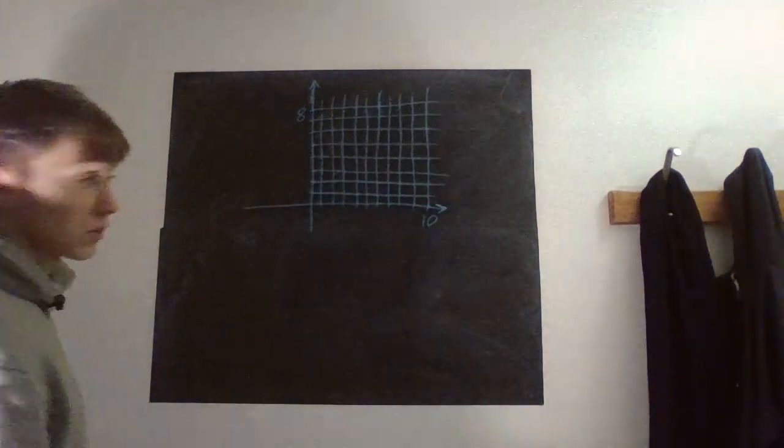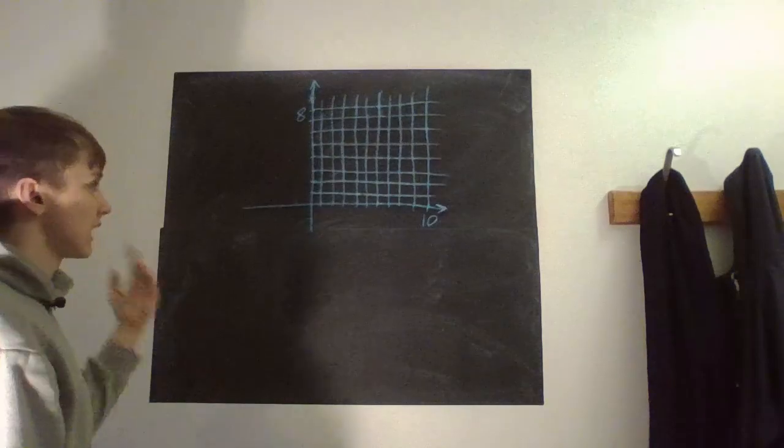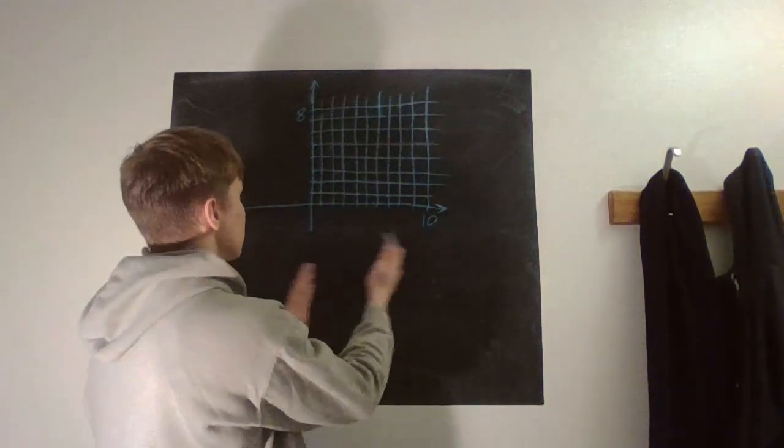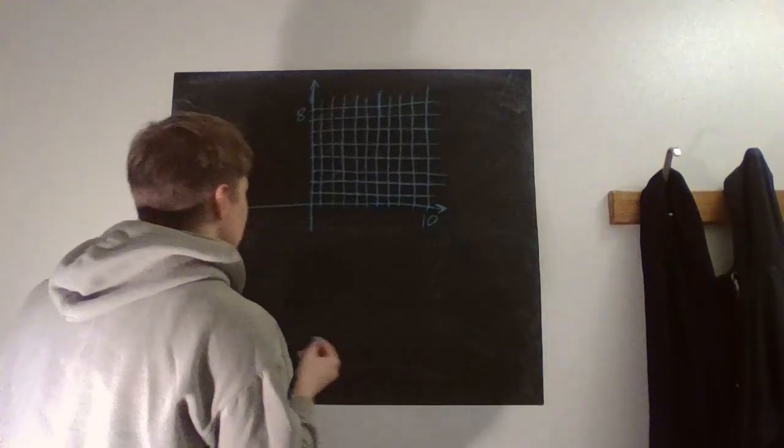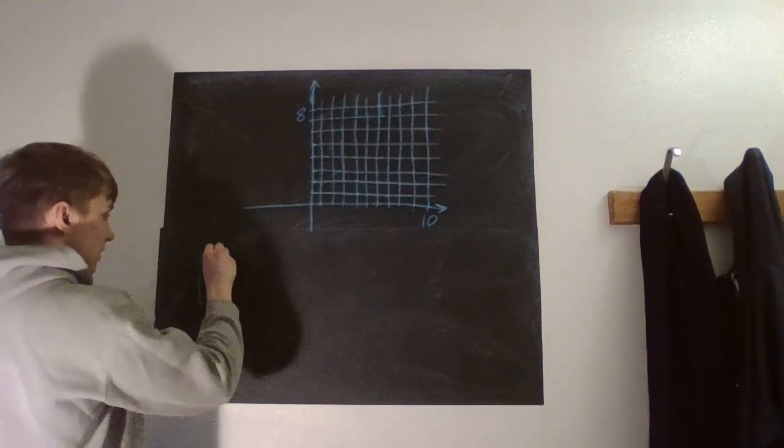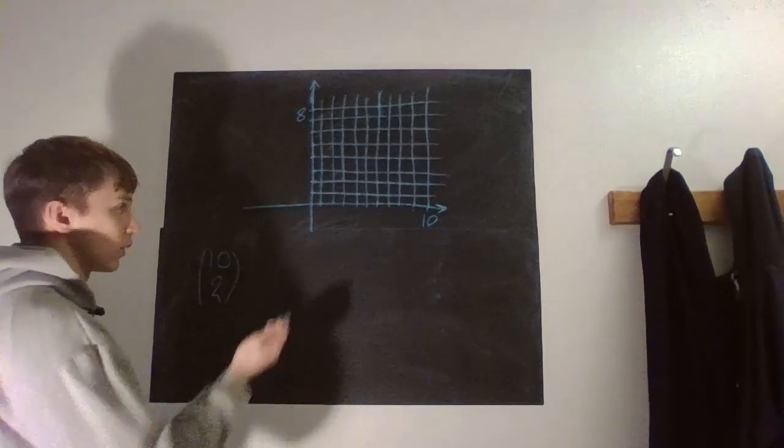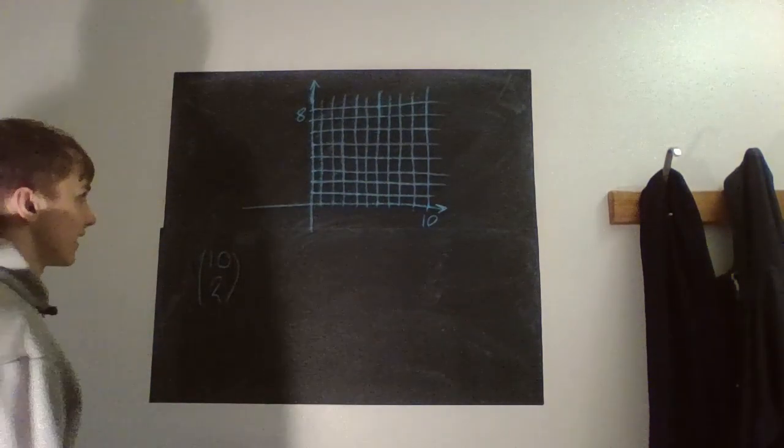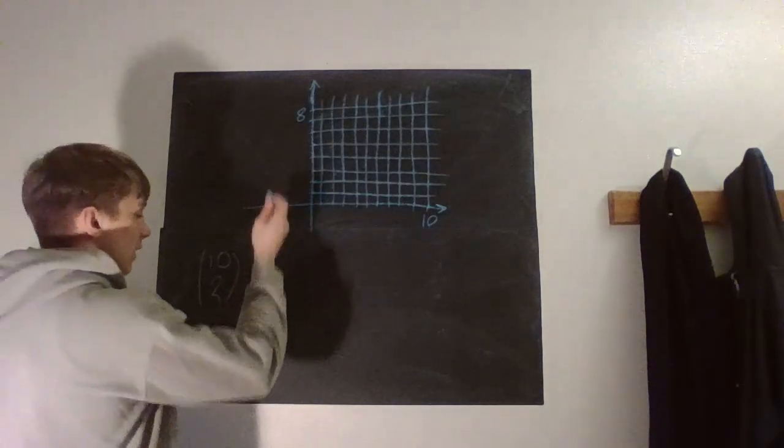And by doing that you can create every single possible rectangle. So how many ways can we choose our x? Well, that is obviously just 10 choose 2. It's literally what I said, you choose 2 out of 10. And then for the other one you have 8 choices, so it's just 8 choose 2.